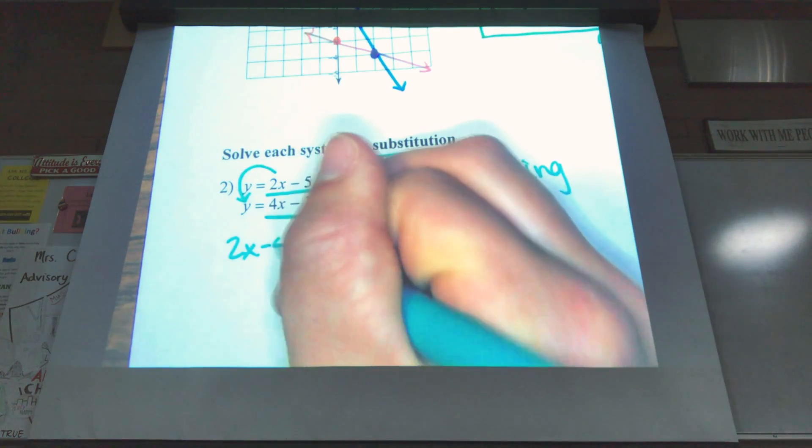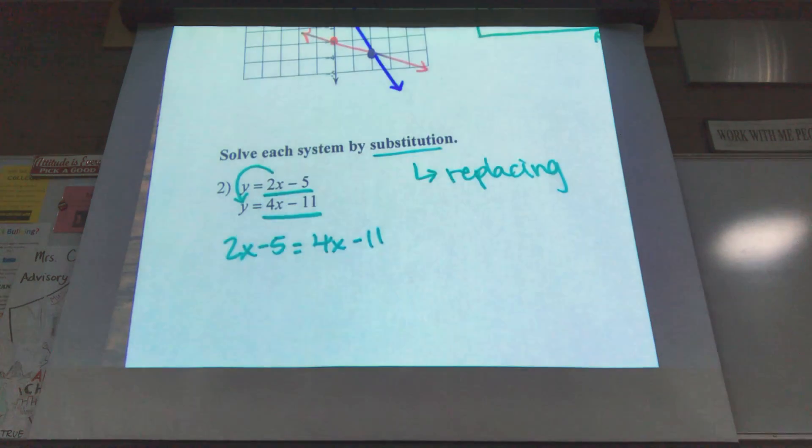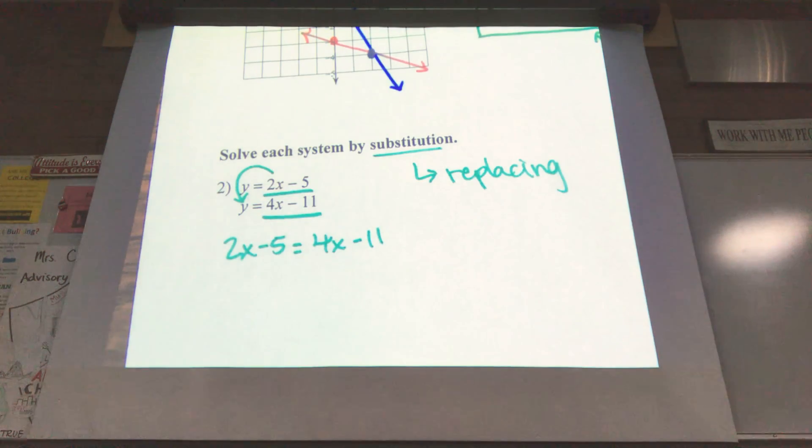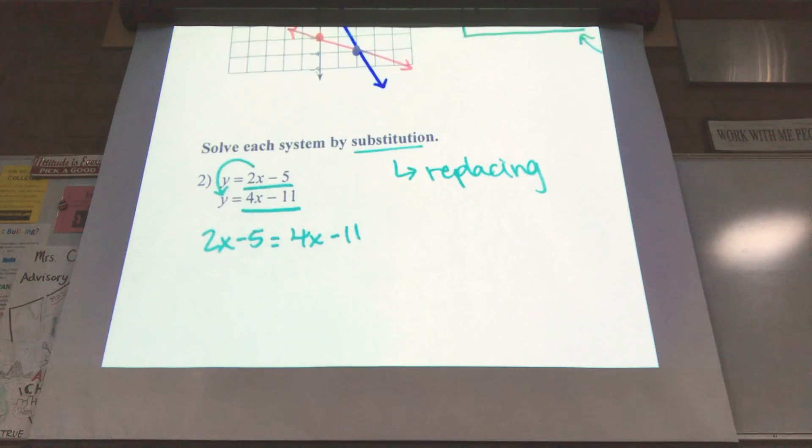2x minus 5 equals 4x minus 11. Another way you can think of this is if they're both equal to y, which they are, they equal each other.